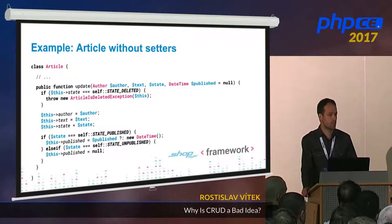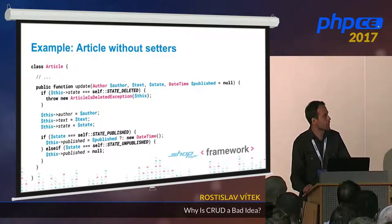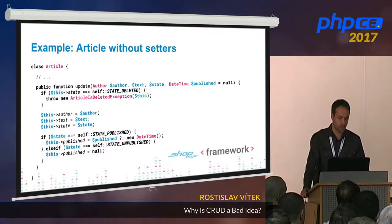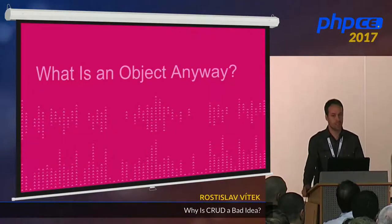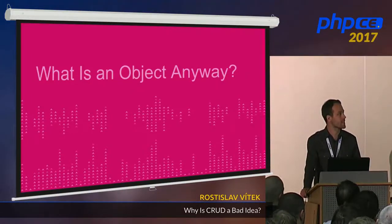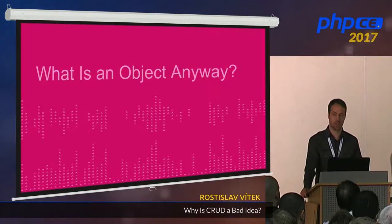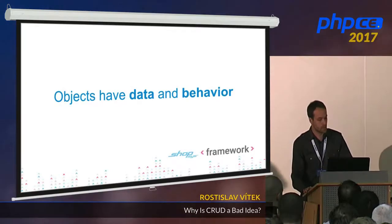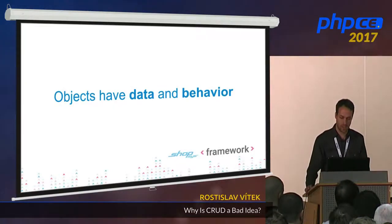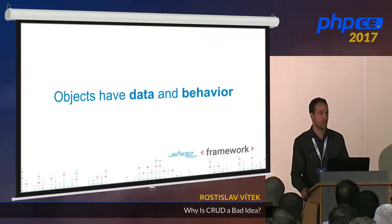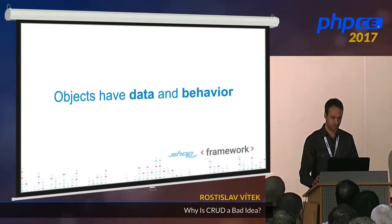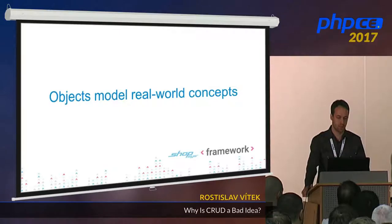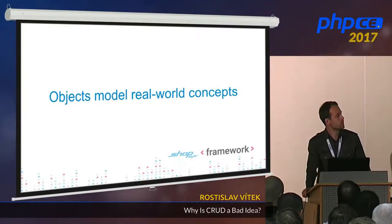What is more interesting is the update method, because you can do all the stuff that is necessary for updating the article. That means you set the state of the article and also set the published date, and when the state is not accepted you can throw an exception. Now let me take a quick detour — since we are talking about basics, let's go really deep and think about what an object actually is.